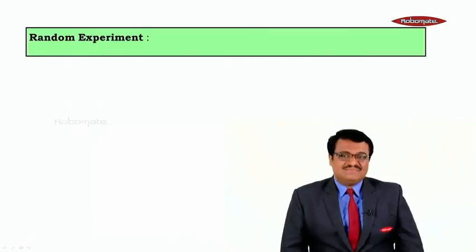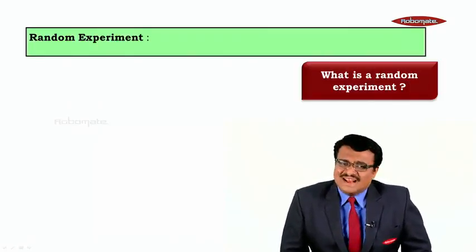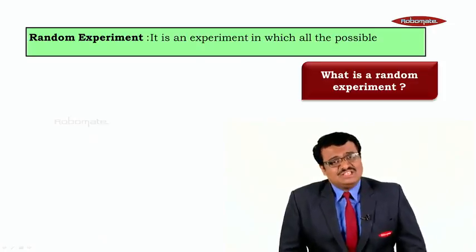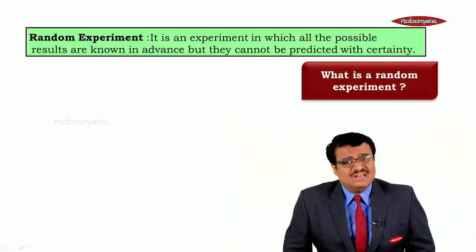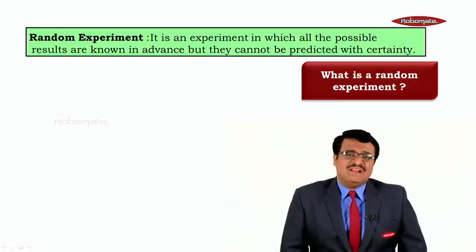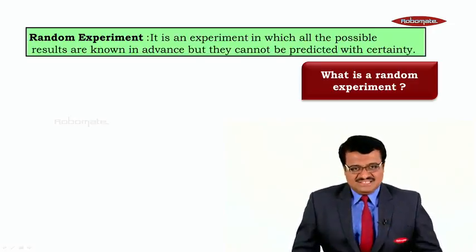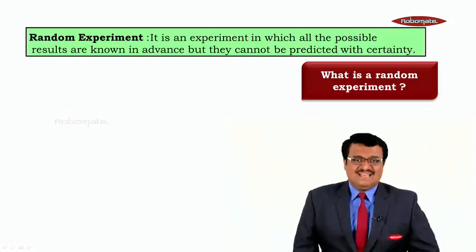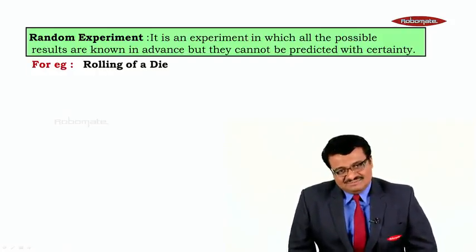The first thing that you should understand in probability is random experiment. What is a random experiment? It is an experiment in which all the possible results are known in advance, but they cannot be predicted with certainty. You know all the possible results, but you cannot predict it with certainty. For example, rolling of a die.